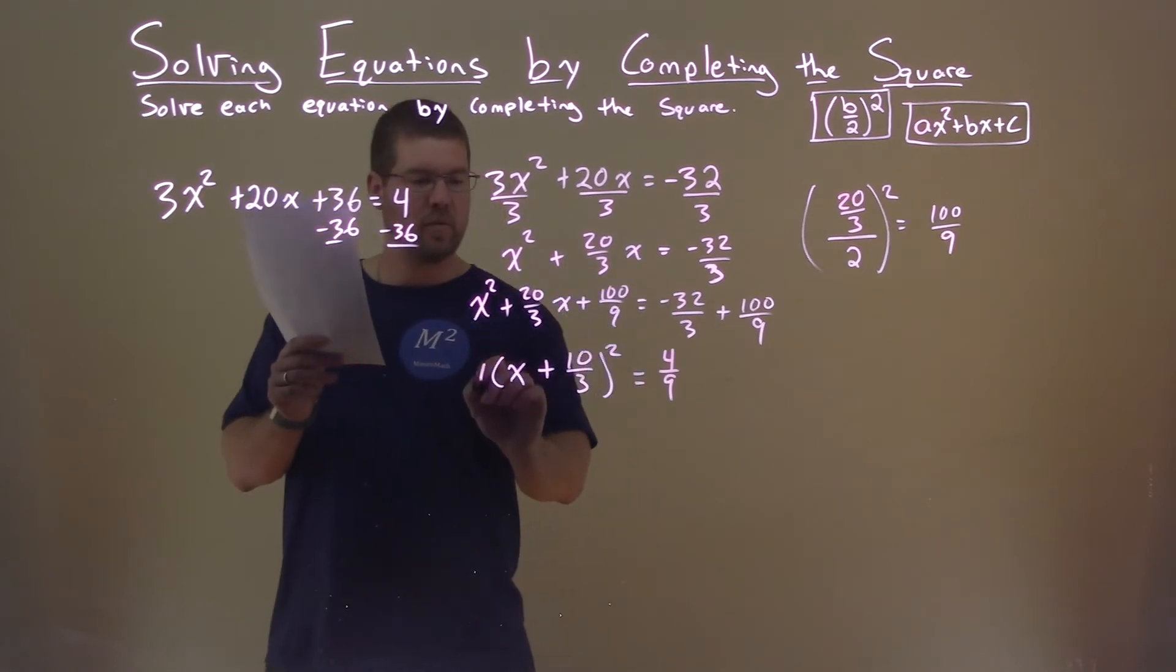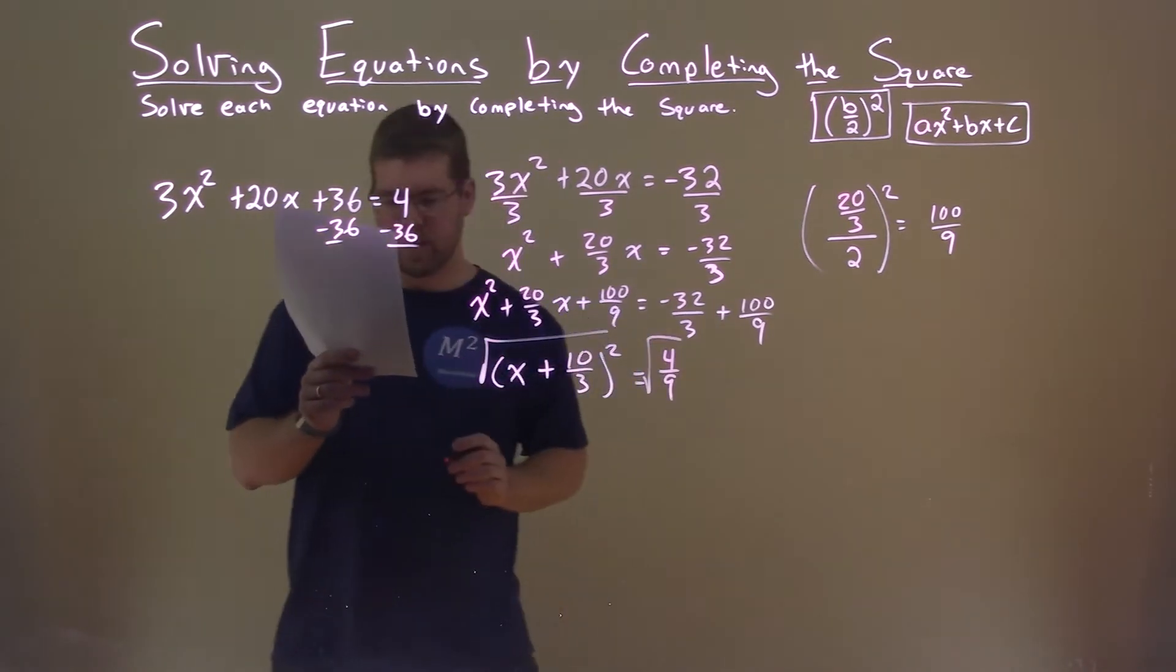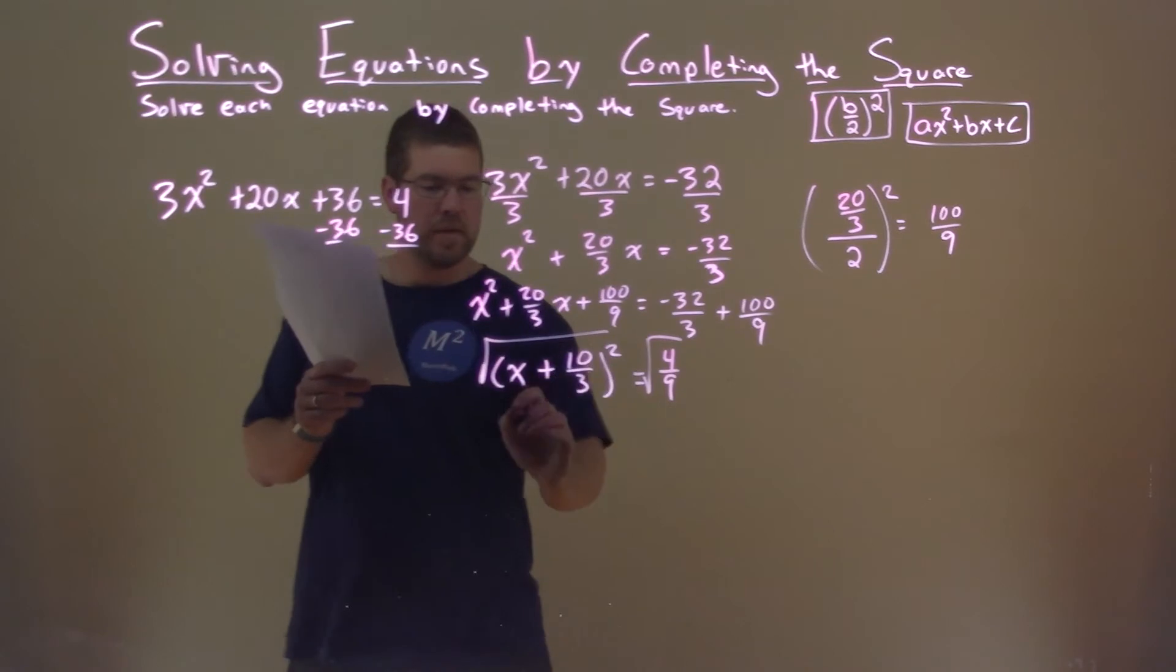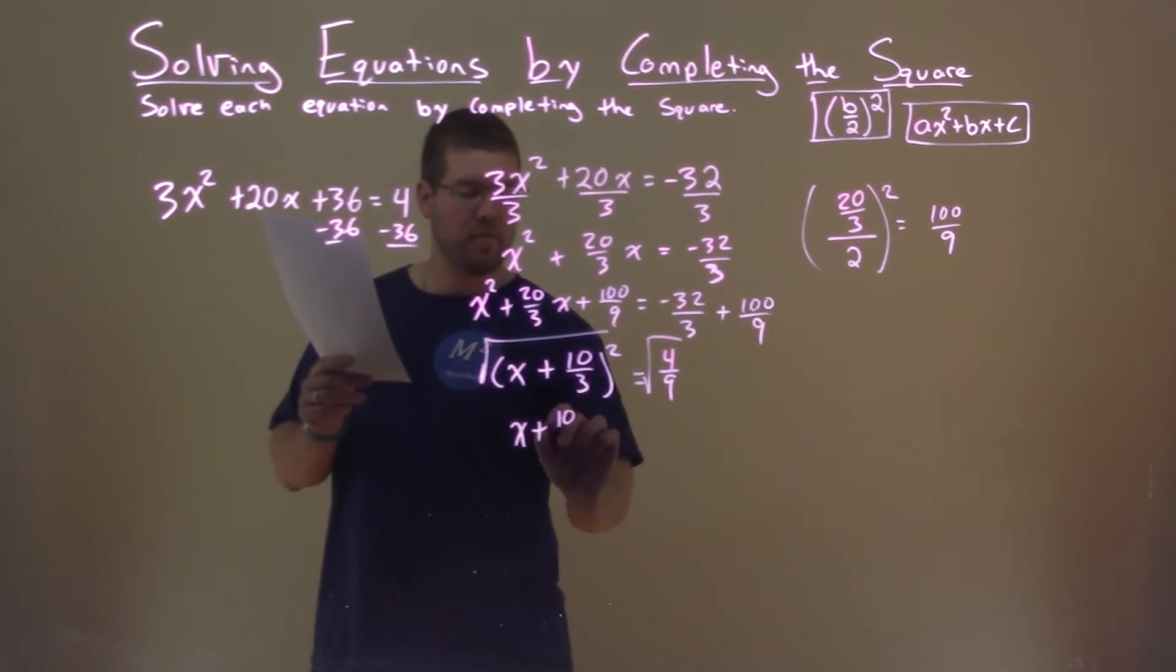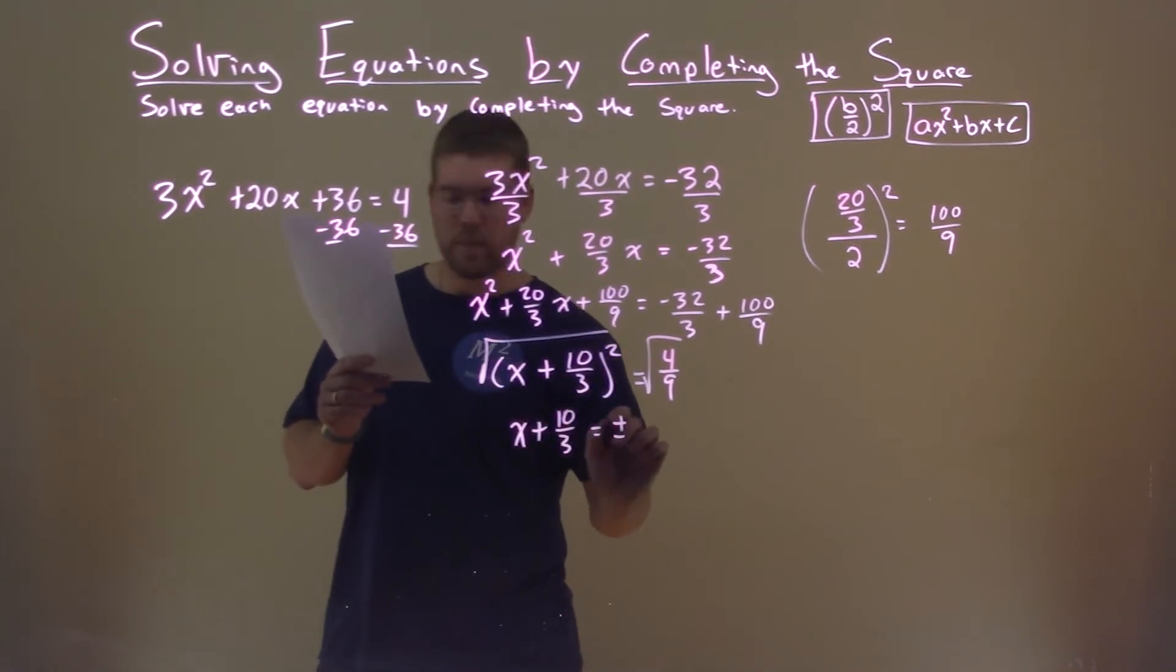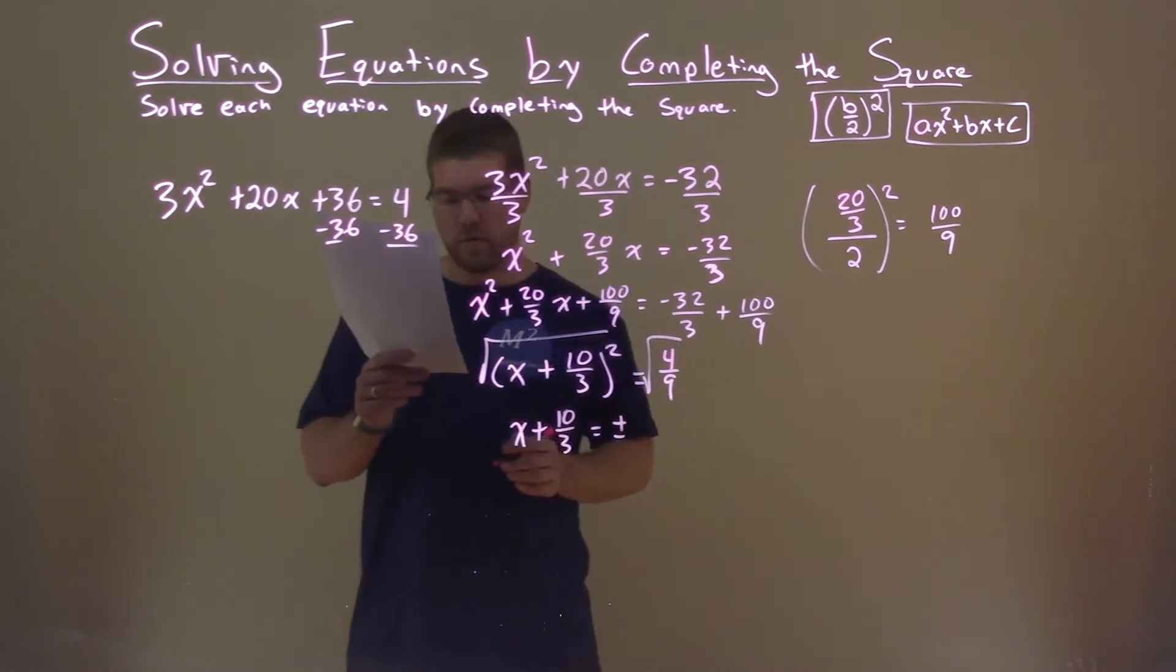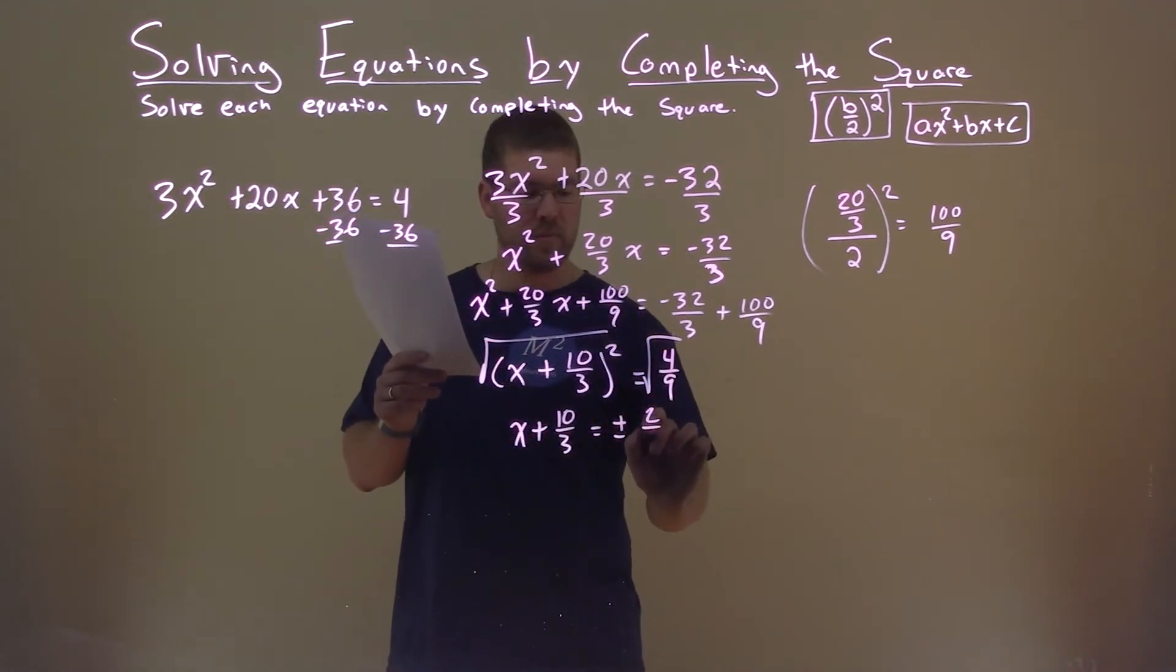All right, we can take the square root of both sides here, and what do we get? We have x plus 10 over 3 equals plus or minus here. And the square root of 4 ninths simplifies to be 2 thirds.